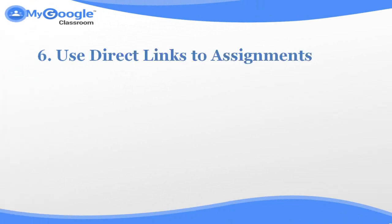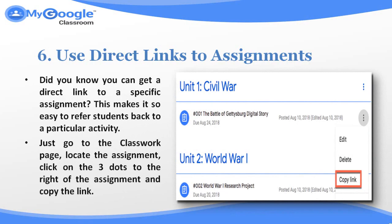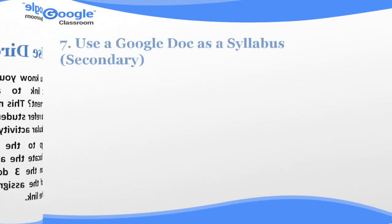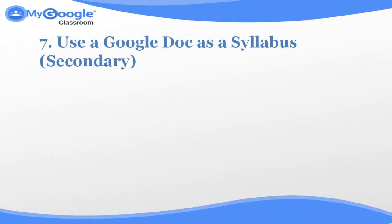Number six: use direct links to assignments. Did you know you can get a direct link to a specific assignment? This makes it so easy to refer students back to a particular activity. Just go to the Classroom page, locate the assignment, click on the three dots to the right of the assignment, and copy the link.